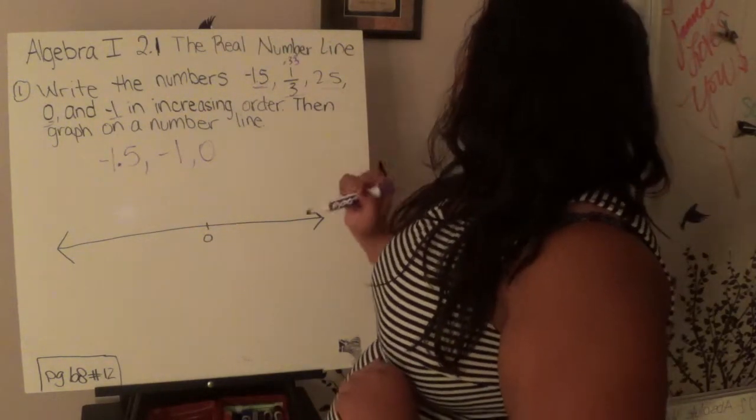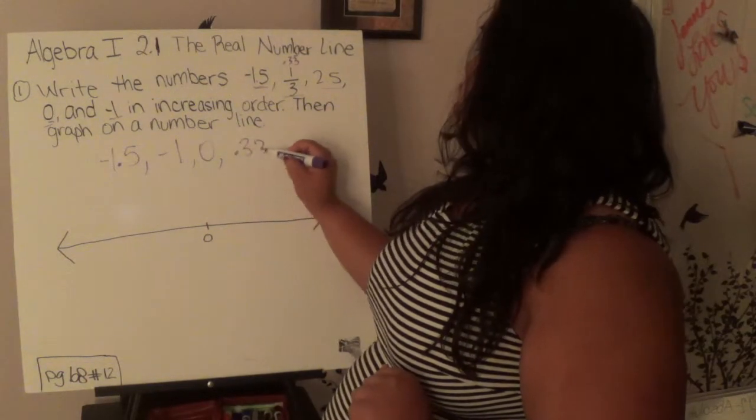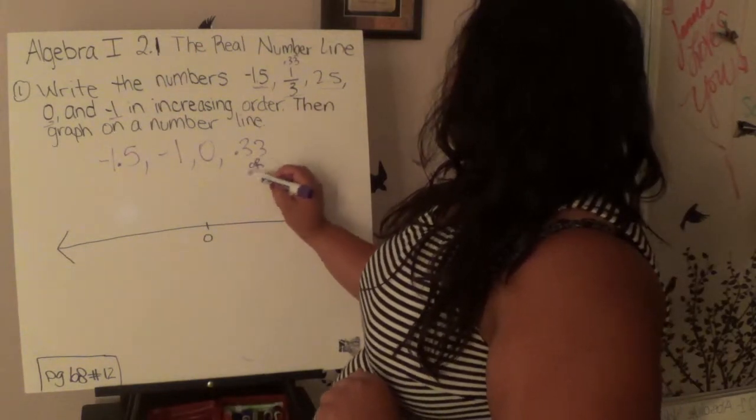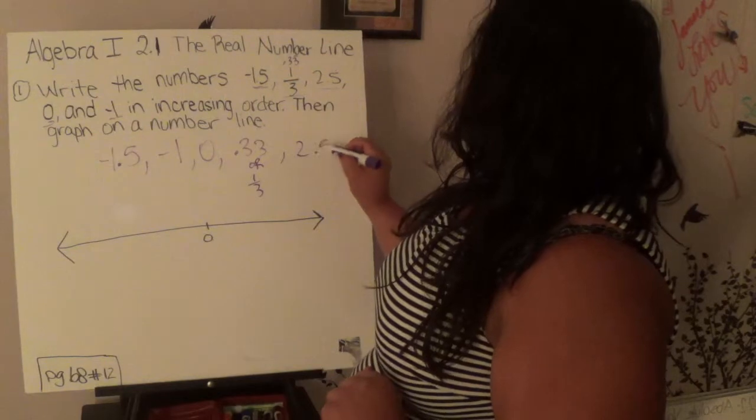It repeats, and this is 2.5. So we have 0.33 next, or 1 third, and then our biggest number is 2.5.